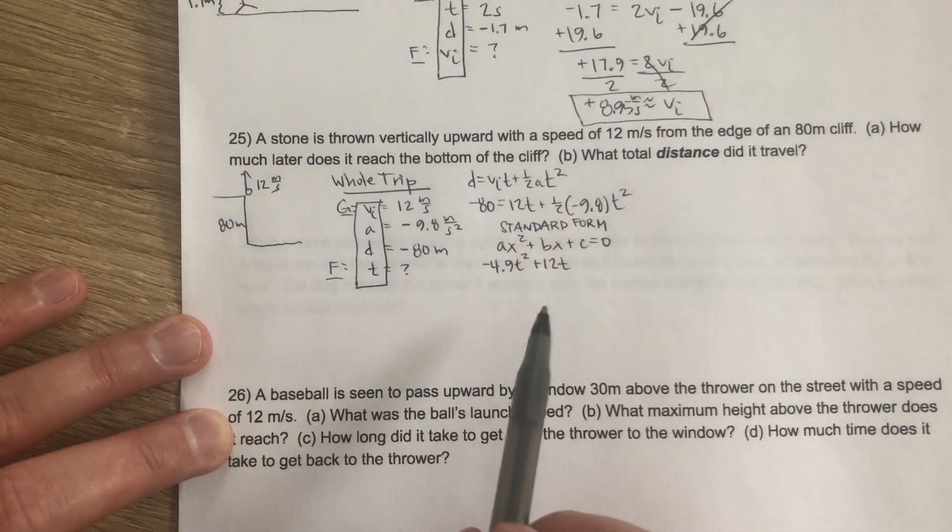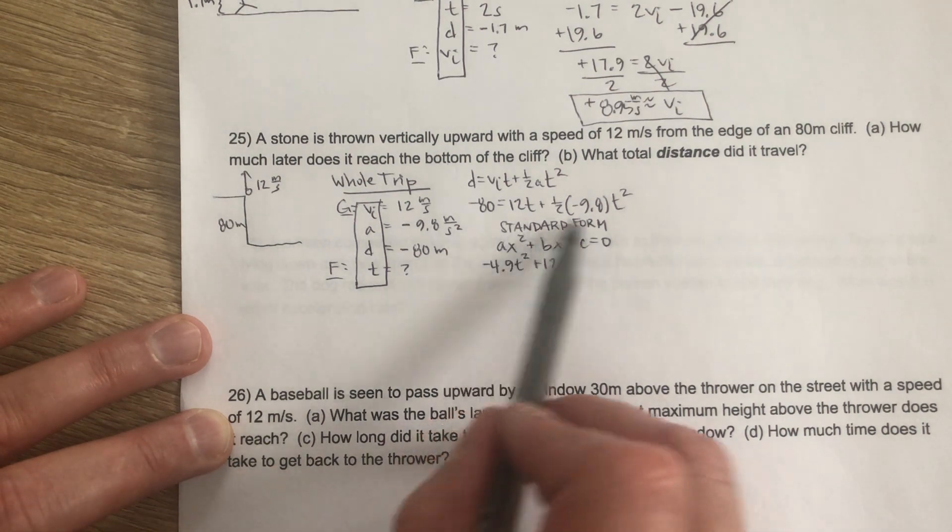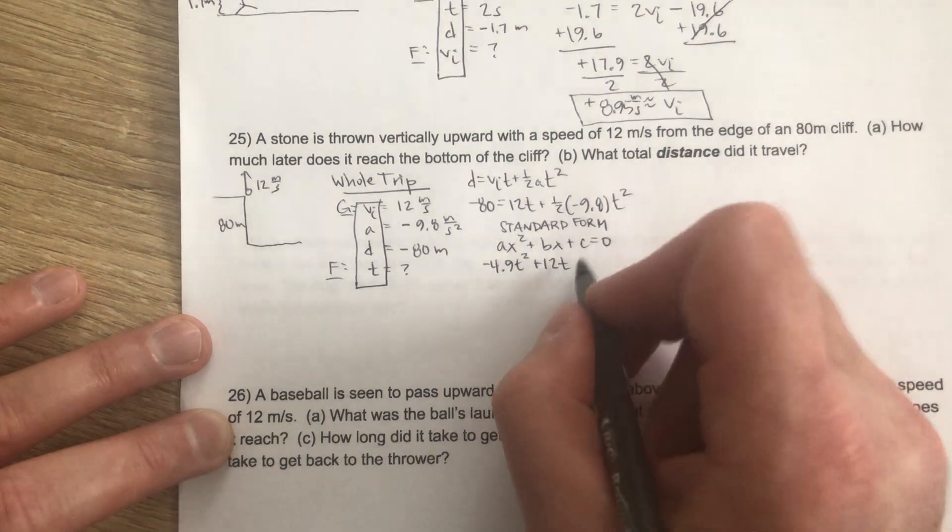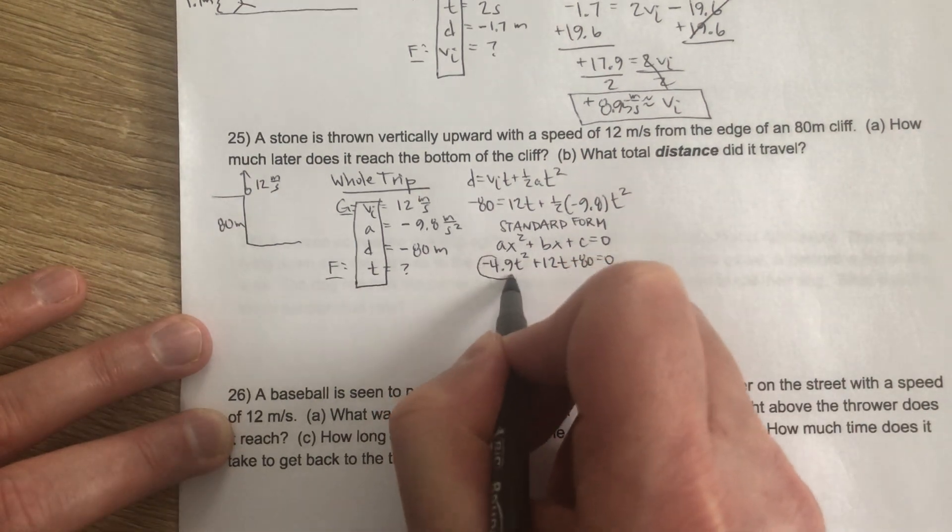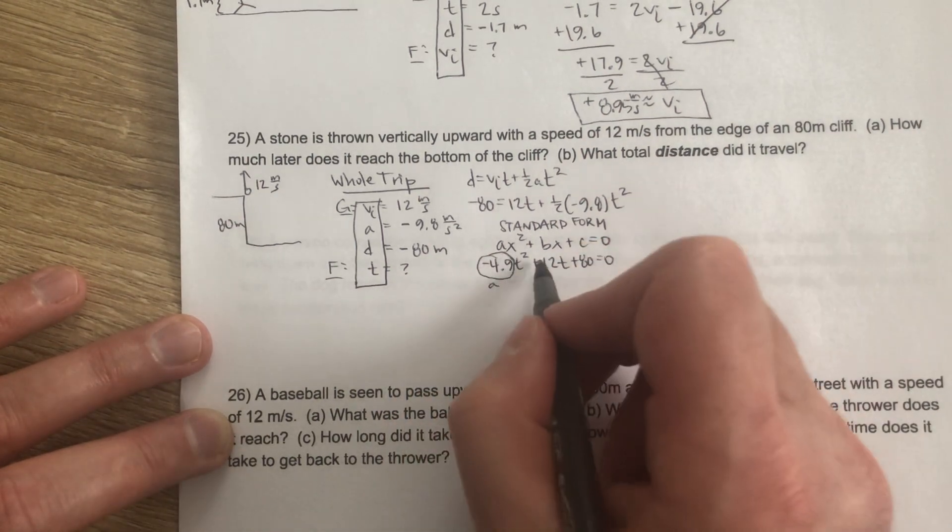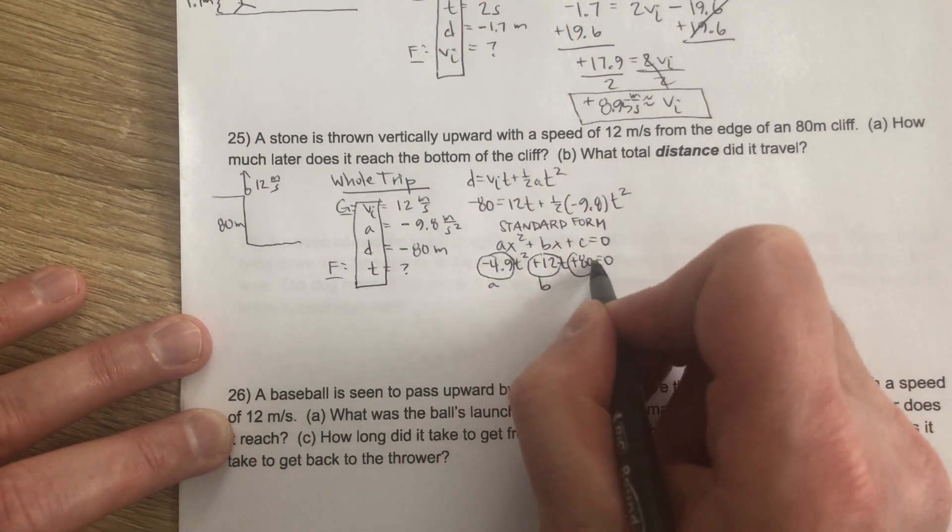And then in order for us to be able to use this to do the quadratic formula, we need to make it equal 0. So we'd add 80 to both sides. So plus 80 equals 0. So negative 4.9 is our A, 12 is our B, and 80 is our C.